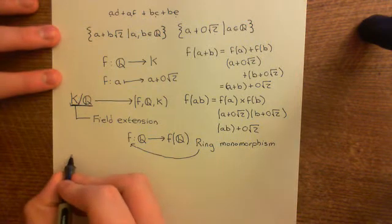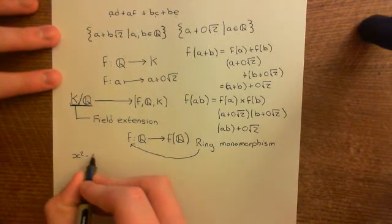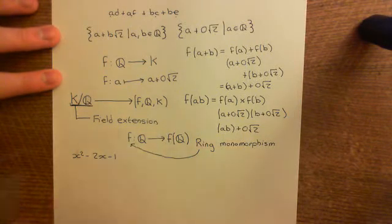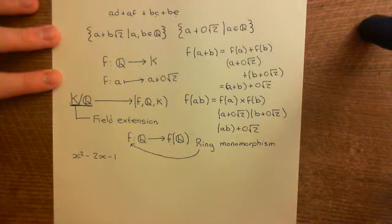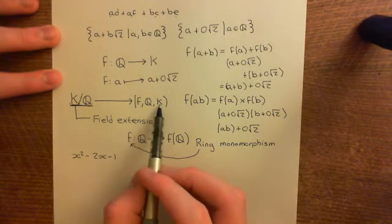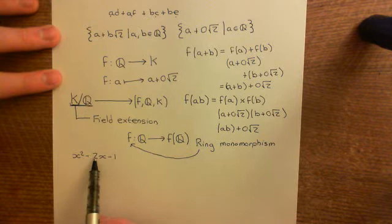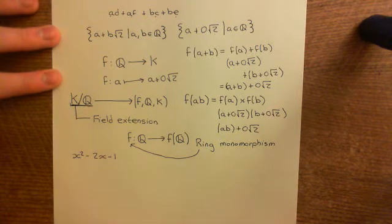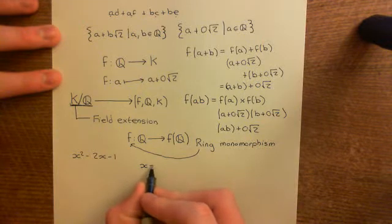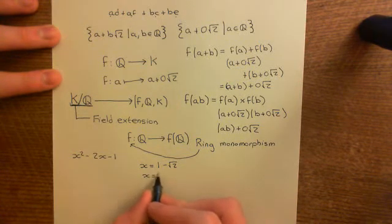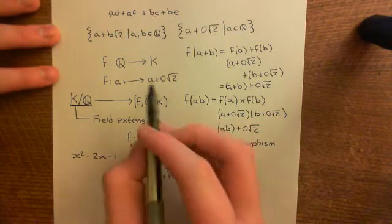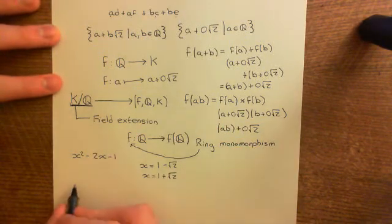The final thing we want to do is make sure that there is actually a solution to the equation x² - 2x - 1 in this bigger field. There should, of course, be two solutions, because as soon as you have one solution you must have the other, since it's going to factorize into linear factors. This polynomial equation still makes sense in this bigger field because we can view it as containing the smaller field, so elements like 2 and negative 1 are all within this larger field. My claim is that the two solutions are 1 - √2 and 1 + √2.